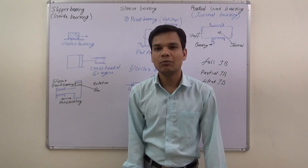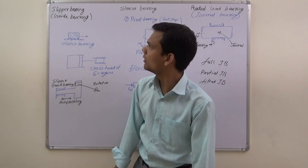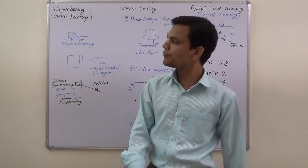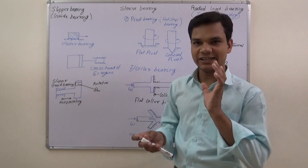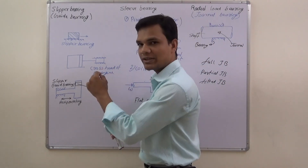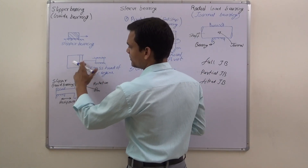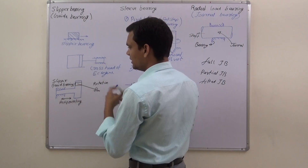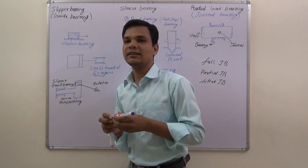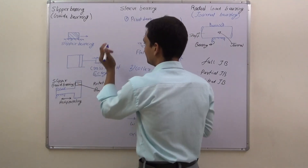First, we understand about slipper bearing. These bearings are used for straight line sliding — meaning in this bearing, sliding occurs in a straight line. These bearings are used in an external combustion engine for a crosshead.